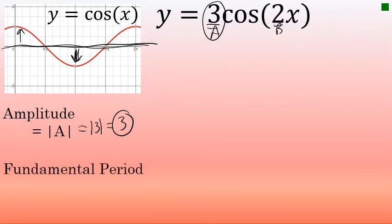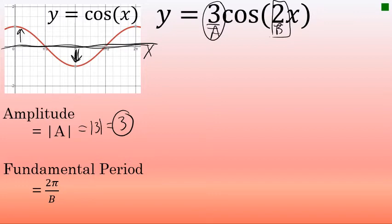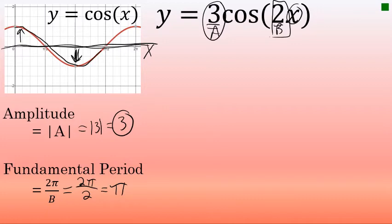The value of b is associated with the fundamental period of the wave — that is, how many units on the x-axis it takes to complete one cycle. For trig functions measured in radians, the formula for fundamental period is two pi over b. In this case, b equals two, so the fundamental period is two pi over two, or just pi radians. This means the cycle of the graph will be completed after pi radians along the x-axis.